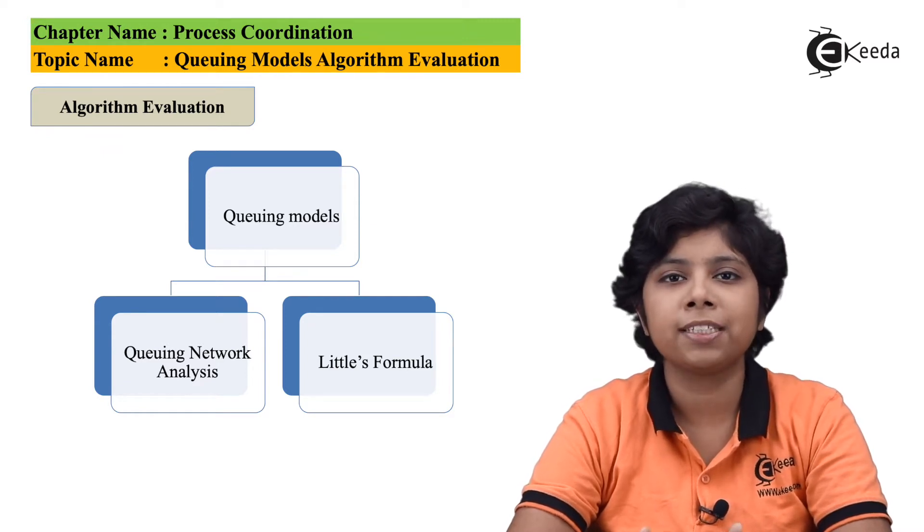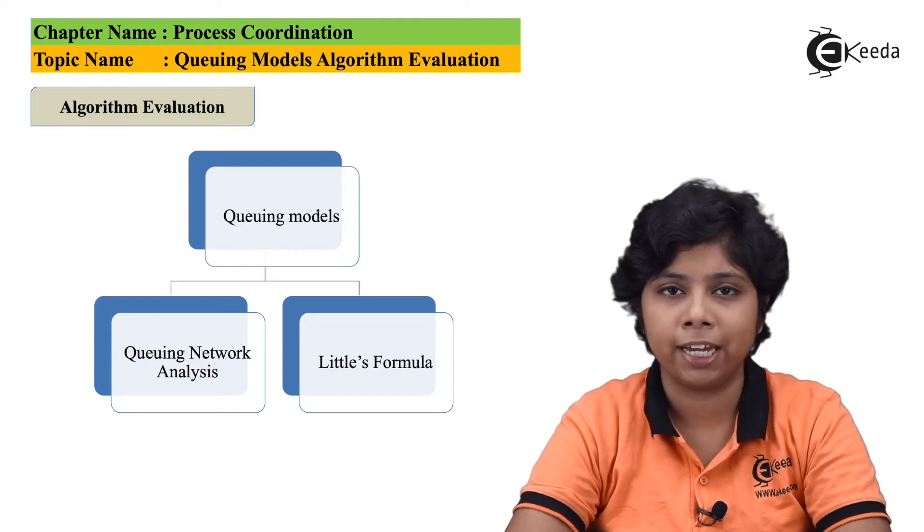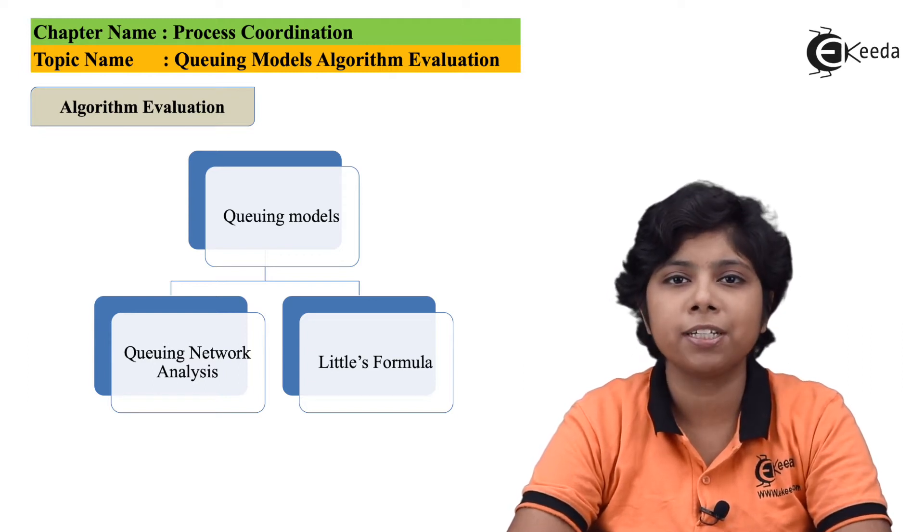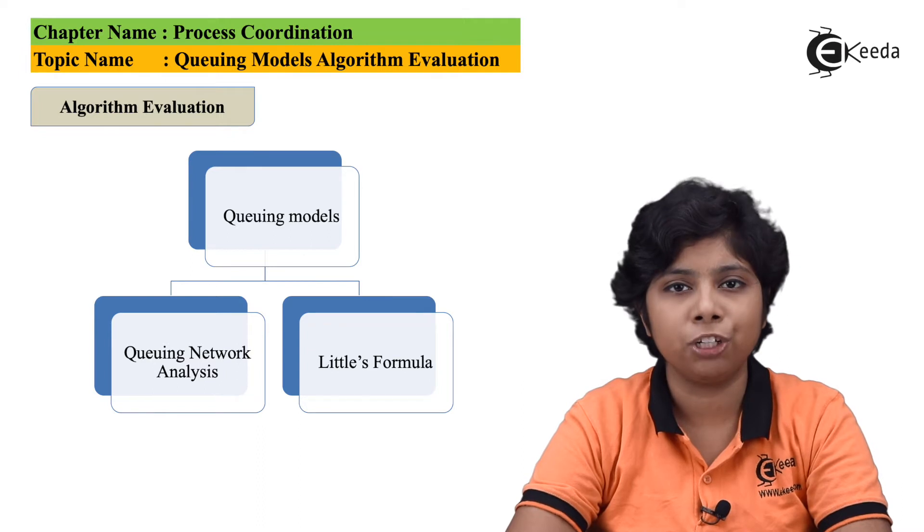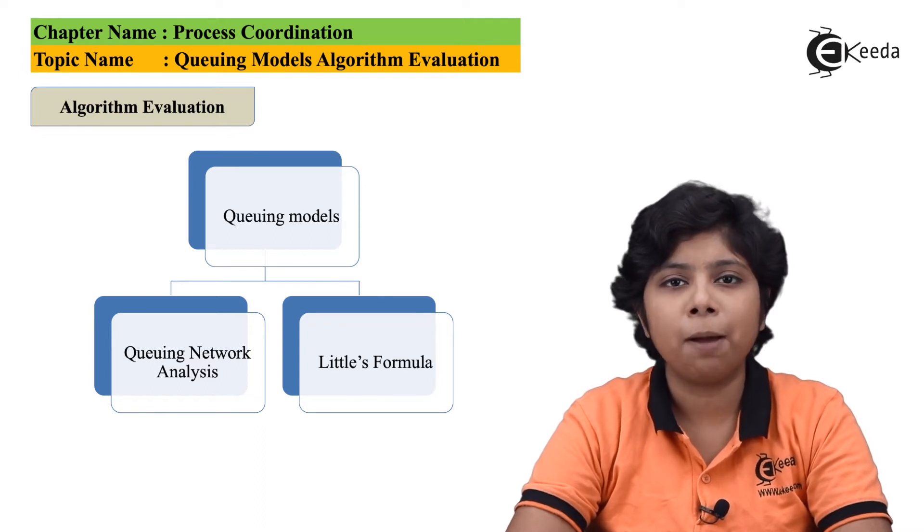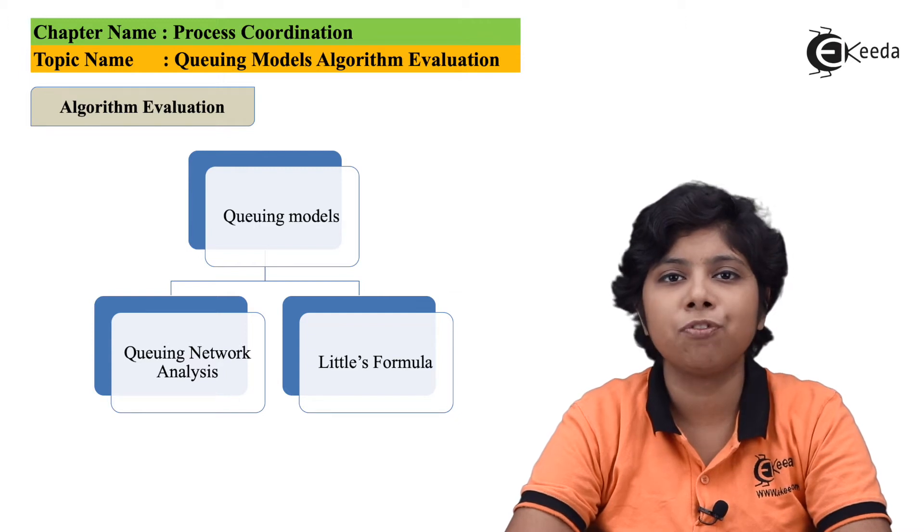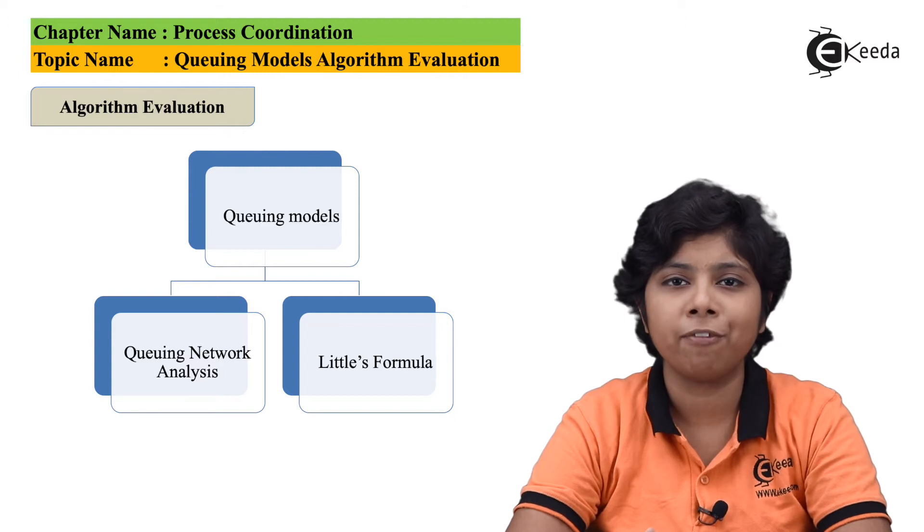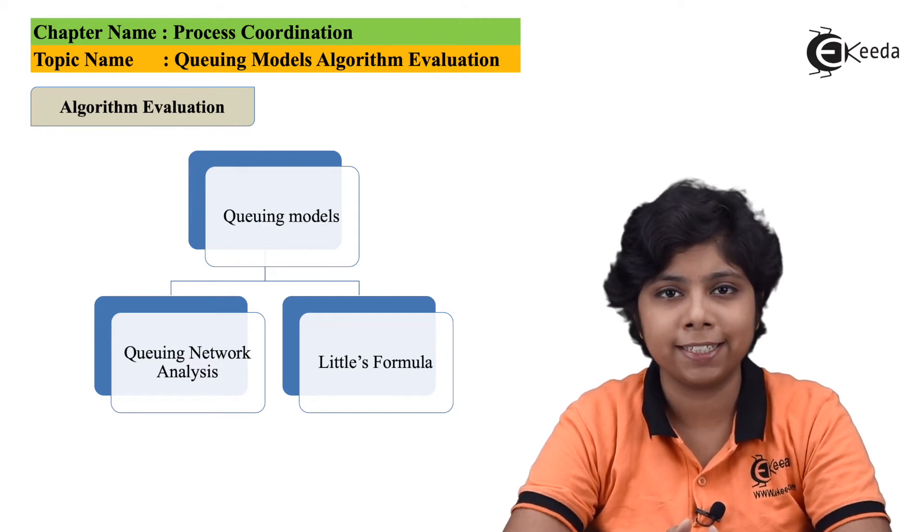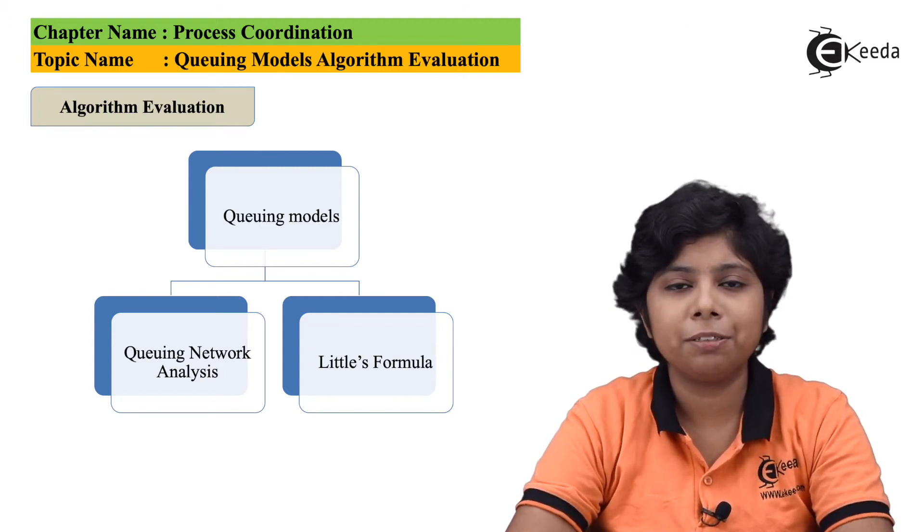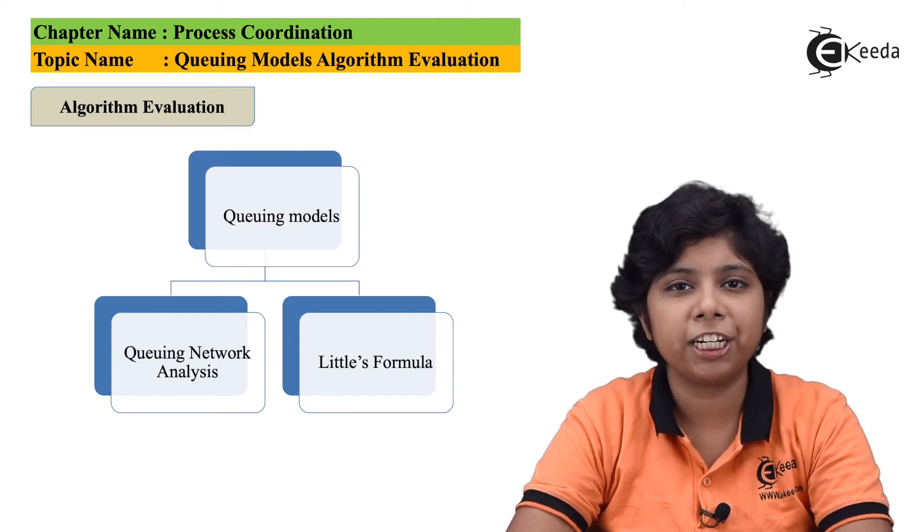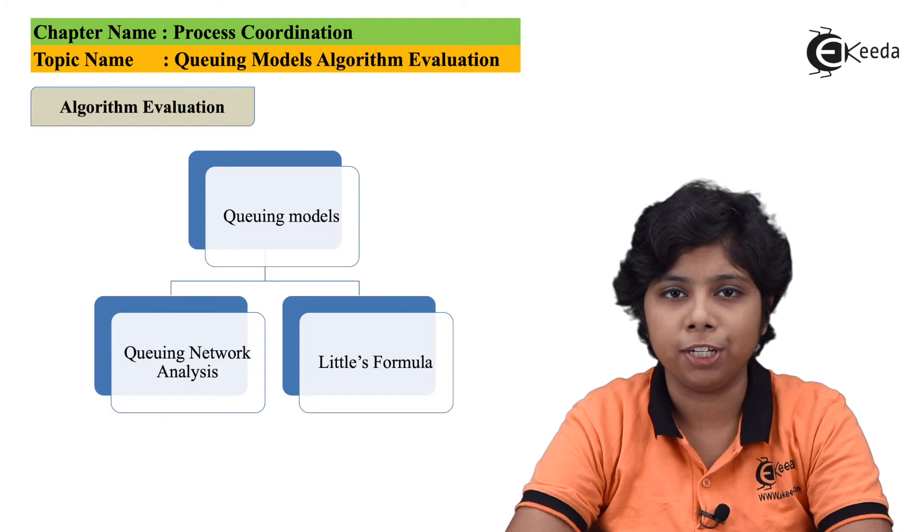Suppose there are 7 processes that arrive to a system per second and there are 14 processes that are waiting in the queue. So, w equals n by lambda, that is equal to 14 by 7, which is 2 ms of waiting time average per process in that system. Queuing algorithms can be evaluated to actually compare the scheduling algorithms very usefully.